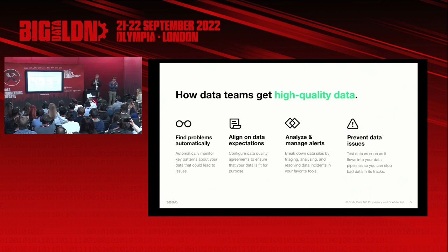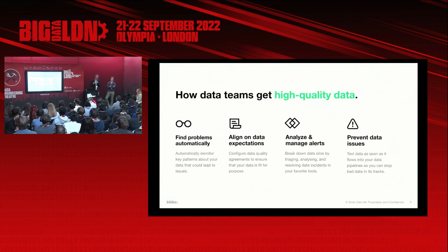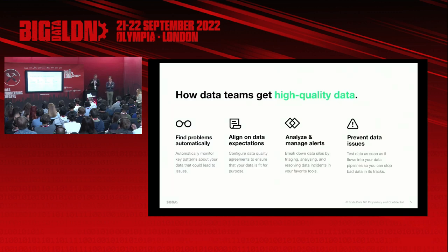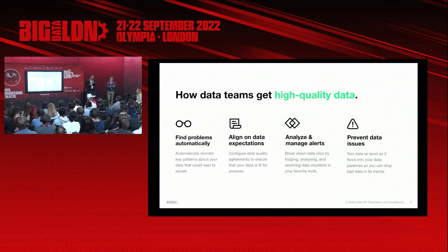The second pillar is being able to align on expectations. This goes more towards the data consumer side, enabling analysts to express what good data quality means for them — in the form of a contract or agreement used as a handover point between consumers and producers. The third pillar is around alerting and managing alerts: notifying the correct stakeholder when something goes wrong, via email, Slack, or Teams.